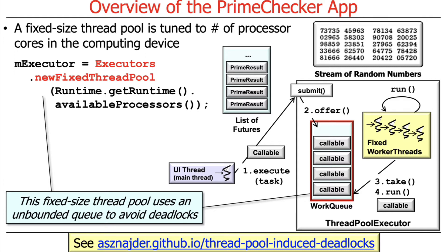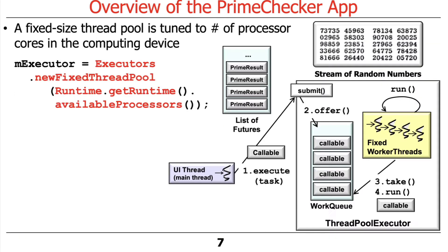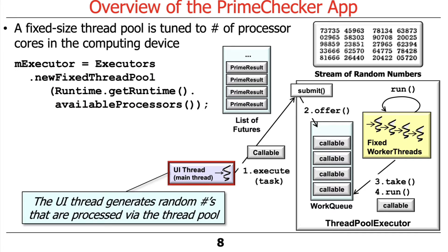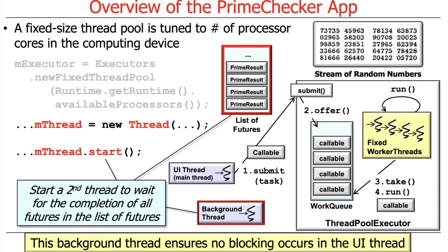Keep in mind that the fixed thread pool by default uses an unbounded queue to avoid deadlocks. There are three different types of threads here: the threads that are part of the thread pool doing the computation, the user interface thread that's responsive to user gestures and requests, and a third thread that is started to wait for the completion of all the futures in the list of futures. We don't want any blocking occurring in the user interface thread, so that third thread waits for results completed by the pool threads.